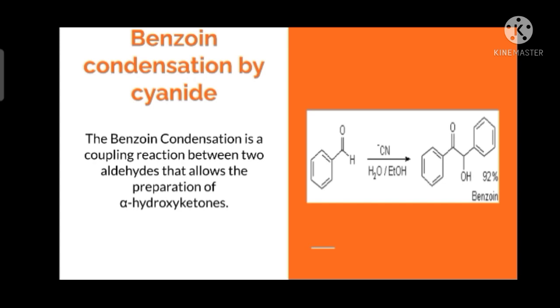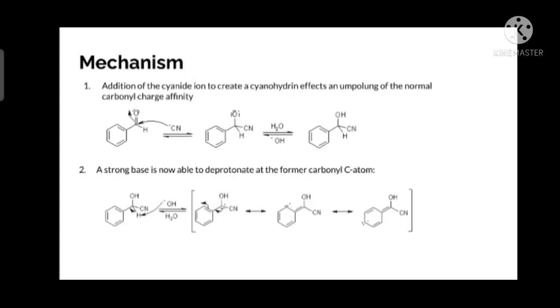Let us see the mechanism. The first step is the addition of the cyanide ion to the benzaldehyde. The cyanide ion will attack the carbonyl carbon of the benzaldehyde. As soon as it attacks the carbonyl carbon, the oxygen will be negatively charged. Then we are performing this in the presence of water, so it will get H+ from there.